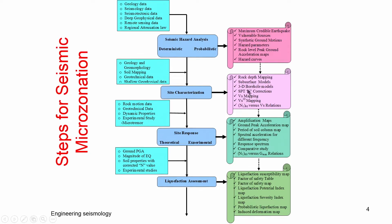By combining hazard analysis and soil properties from steps 1 and 2, you can estimate and quantify how much amplification and modification will occur in the region. This is called site response studies, which can be done theoretically as well as experimentally. Step 3 produces an amplification map, PGA distribution at surface level, response spectrum considering soil amplification, and the predominant and fundamental frequency of the soil column — so that structures are not designed to match that frequency.